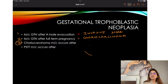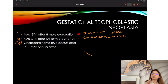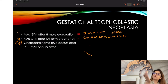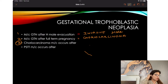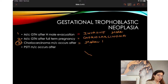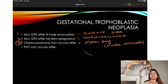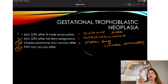Question number three: choreocarcinoma most commonly occurs after? These are two very different questions. Most common GTN after H mole evacuation is invasive mole. Most common GTN after full-term pregnancy is choreocarcinoma. But choreocarcinoma most commonly occurs after molar pregnancy — that is H mole evacuation. Two different questions, two different answers.